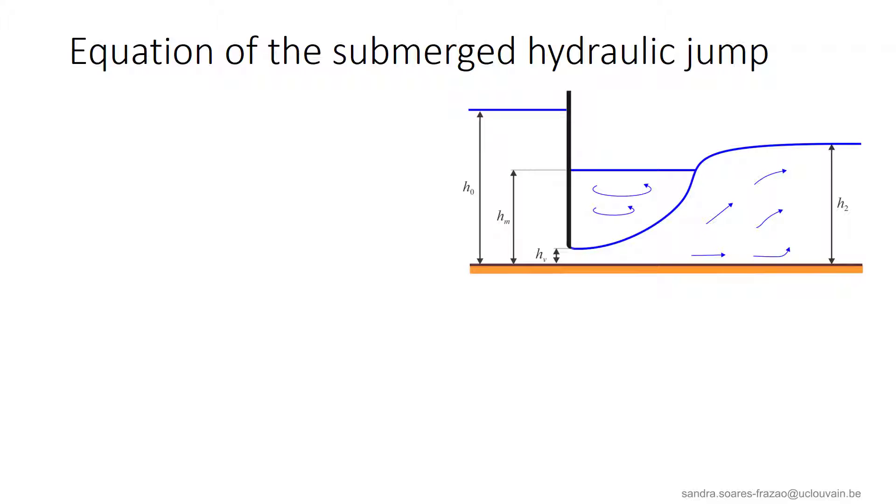The equation of the hydraulic jump aims at determining the depth H2 at the downstream side of the jump. This H2 depth is the depth that will be connected to the downstream flow profile.